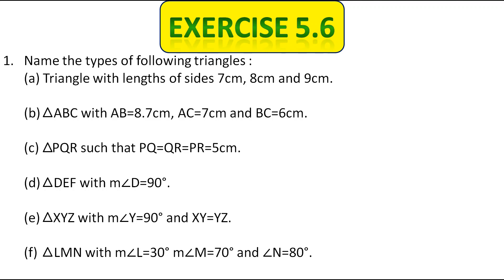If you have any question regarding that topic, you will be perfect and can answer any such questions. So please go through that video, and now we will solve this exercise. The first question is: Name the types of following triangles. The first one is a triangle with length of sides 7 cm, 8 cm and 9 cm. Here the sides are all of different length, so it is called a scalene triangle.